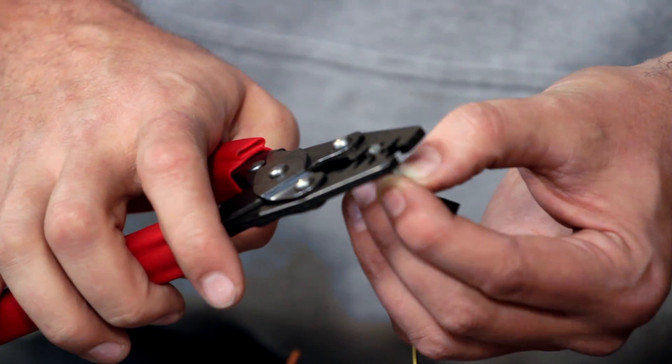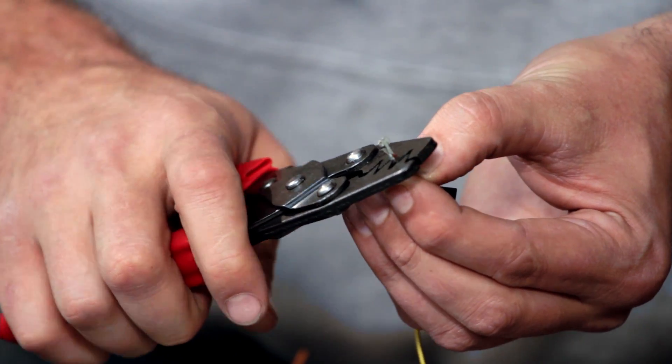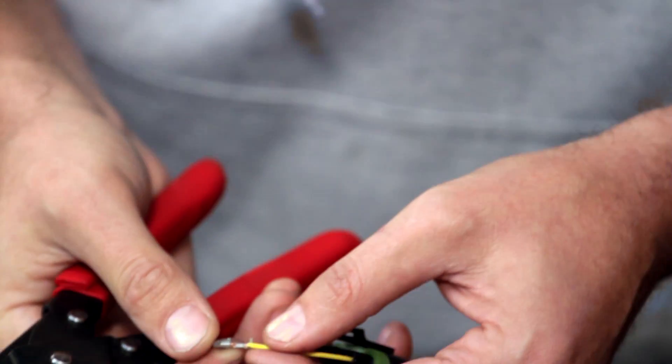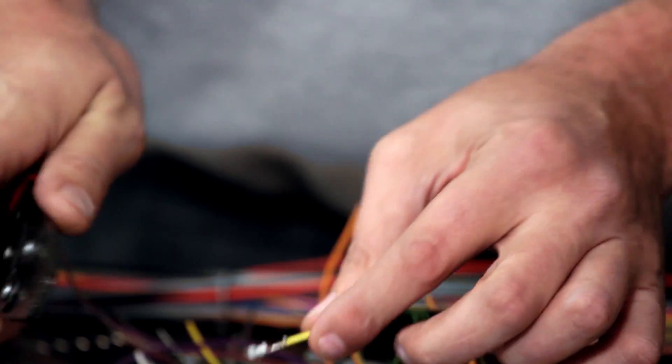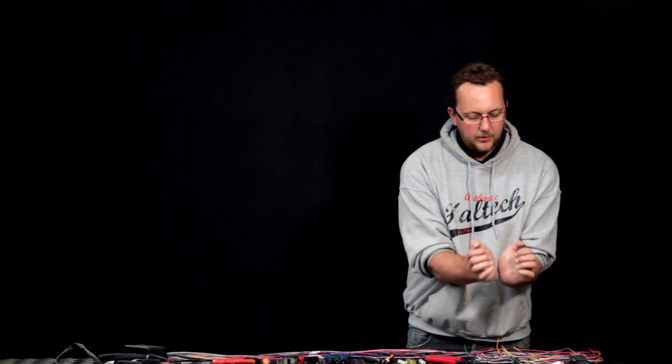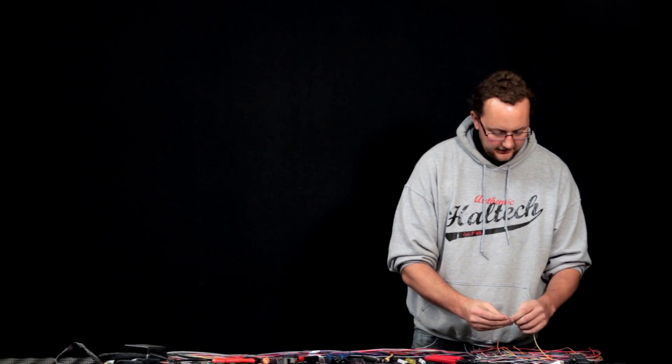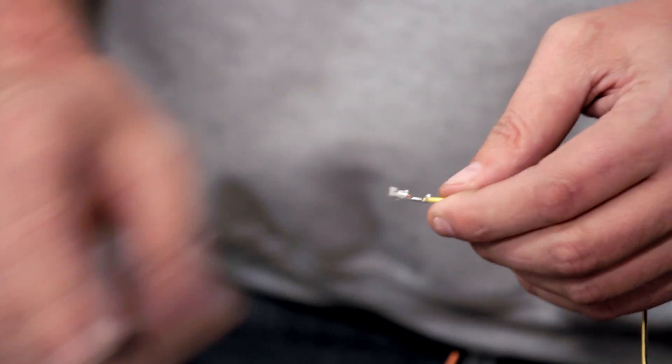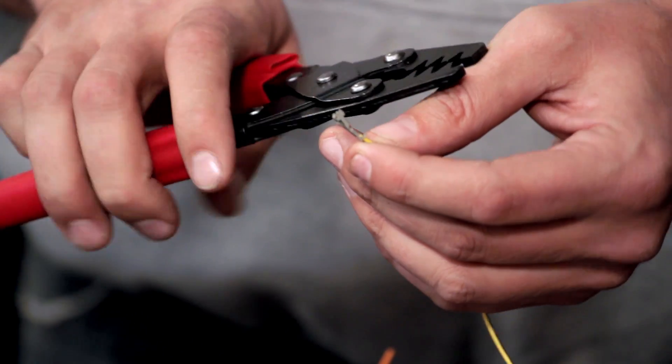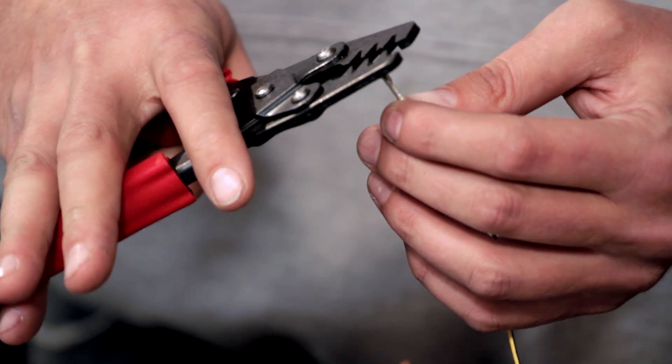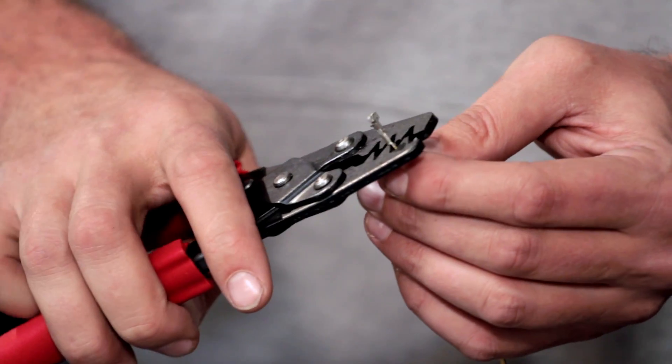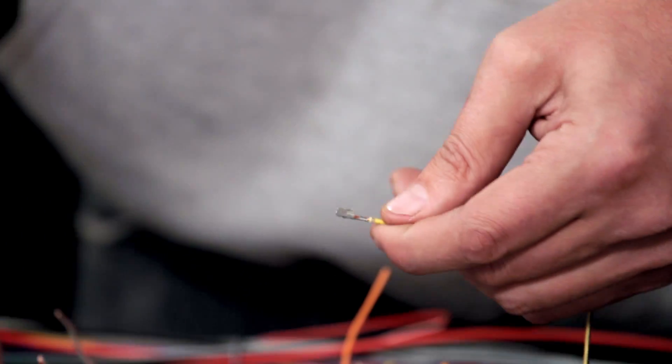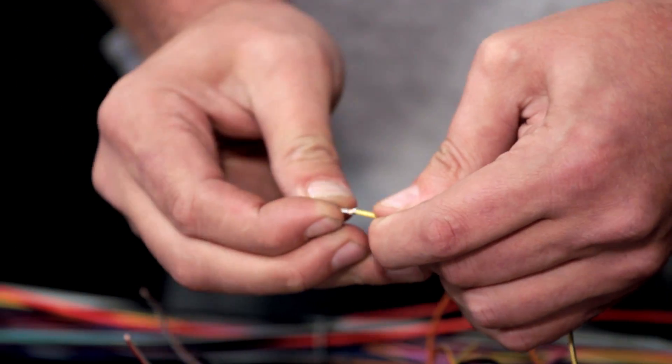So if we just first crimp the top half, nice and tight and release, we can actually see there that the crimpers have actually pulled the wire in together and pulled it down into the pin. So that's nice and tight. We're going to also do our second crimp on the backside into the wire relief. That's also going to crimp down nice and tight. So there we can see that's a properly executed crimp.